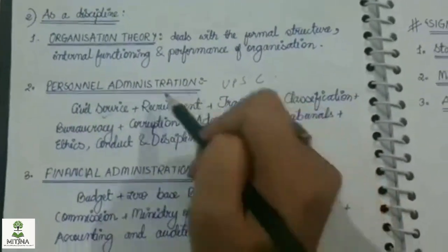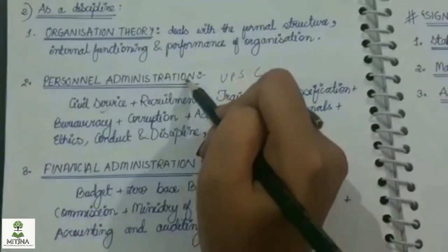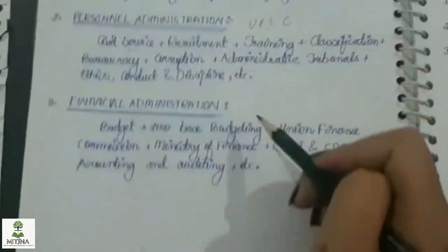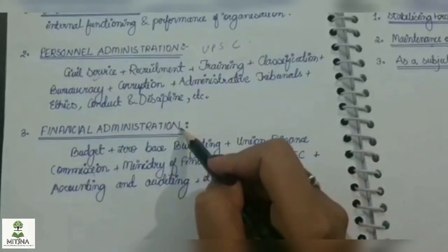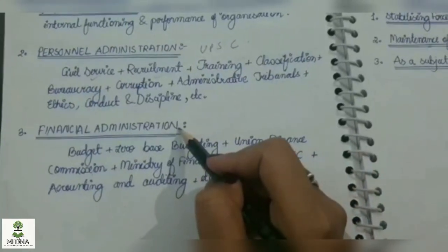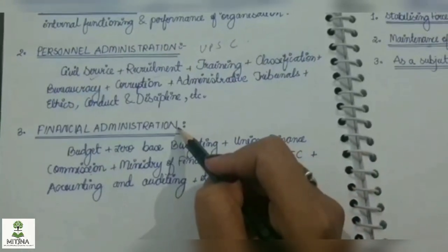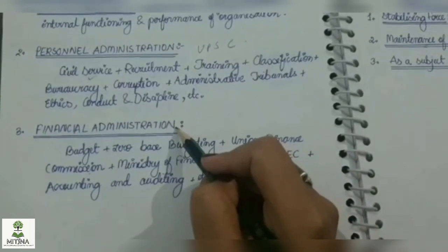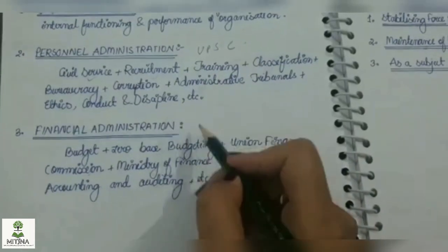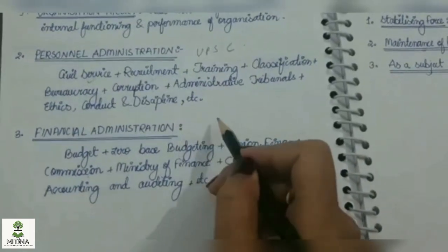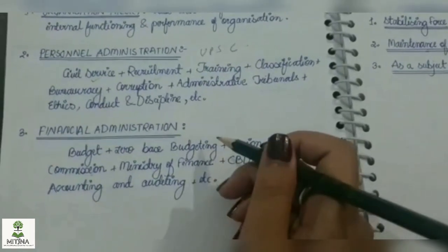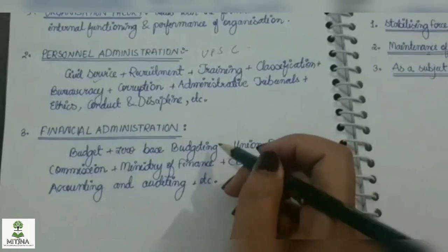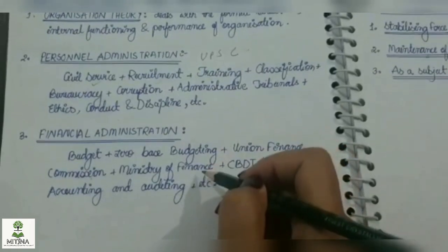This is financial administration. Financial administration is an administration which is related to making available money in order to fulfill the objectives of the government.